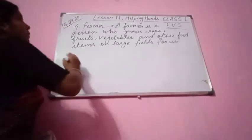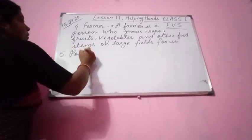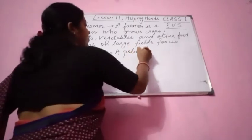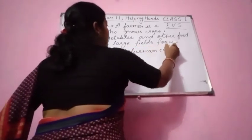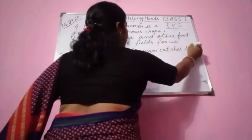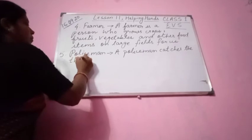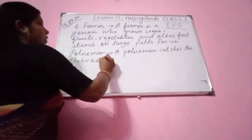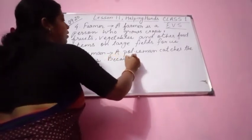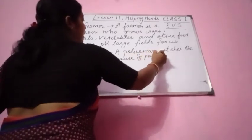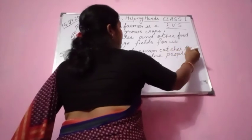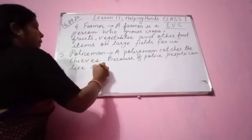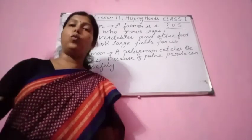A policeman catches the thieves. Because of police, people can live safely. Here, what do you understand by 'people'? People means we, you, I — all these are people. We can live safely in the society.